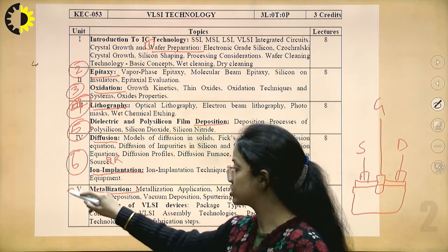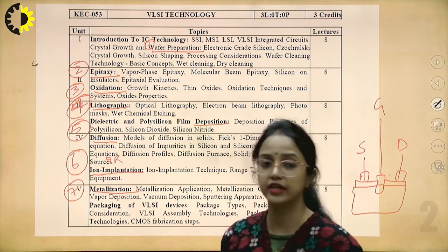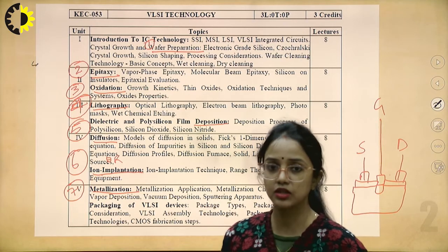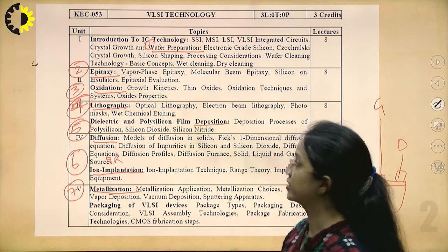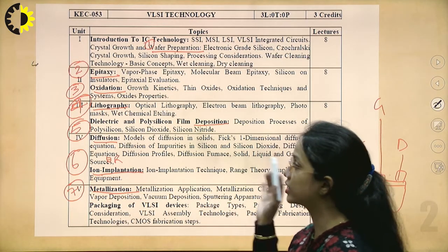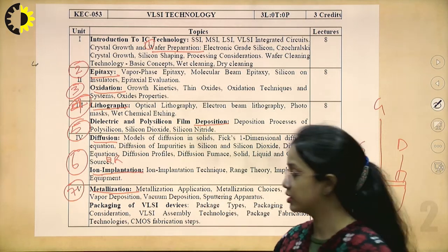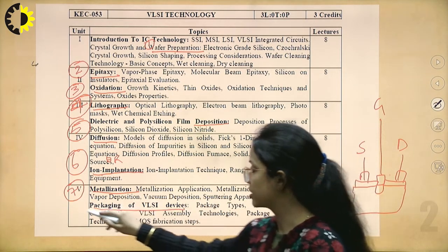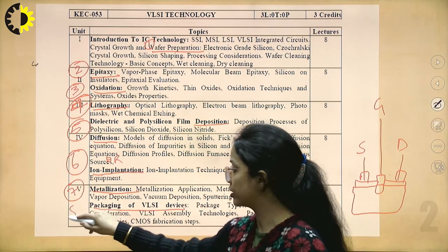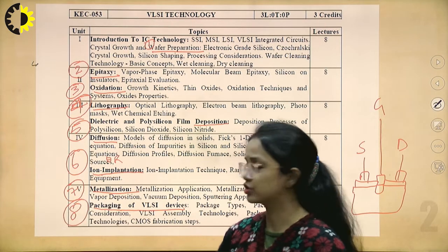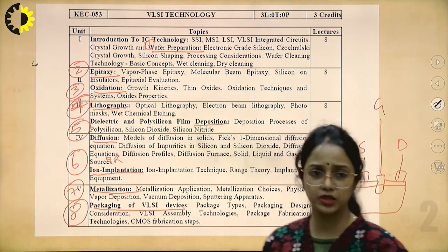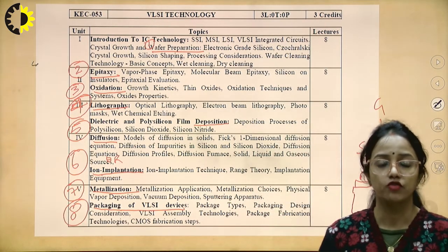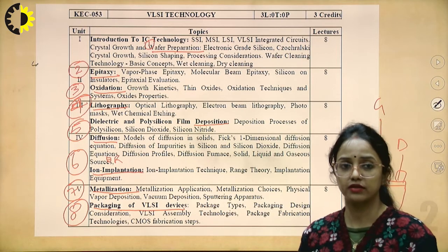This is the seventh step where we perform metallization. At the end, when we complete all these steps, the last step is packaging of VLSI devices. In the next lecture or the one after, we will start covering what is packaging of VLSI devices.